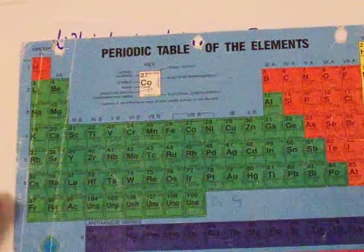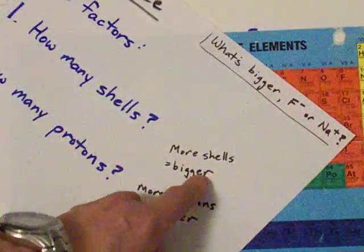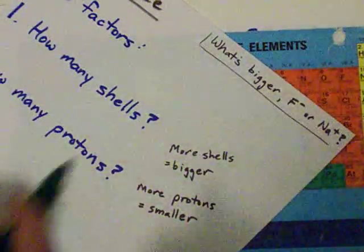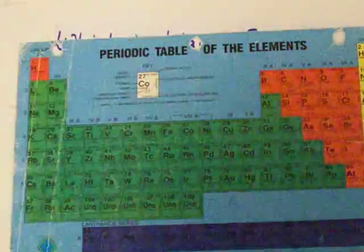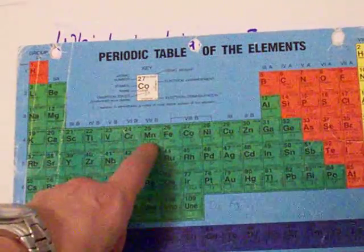Now, one thing I want to point out is that I've been referring to more shells is bigger. I guess I should be specific and say that more electrons is bigger. The reason I said shells before is, for you electron buffs,